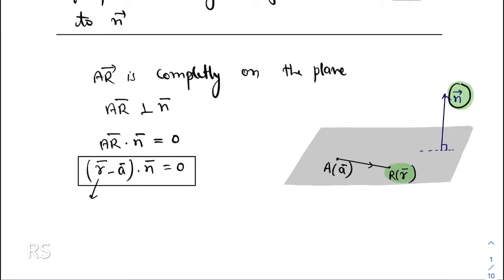This relation is our equation of the plane — it is satisfied by every point lying on the plane. It will not be satisfied by any point not on the plane. For example, if point B with position vector b is not on the plane, then the vector AB is not inside the plane, so AB is not perpendicular to n, meaning (b − a) · n ≠ 0. This is our equation of a plane written in vector form.